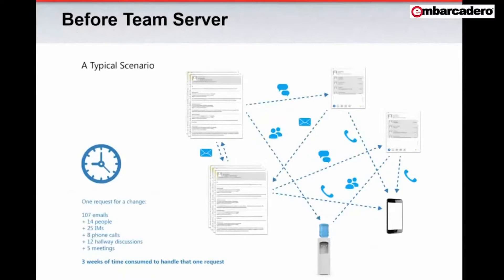Oftentimes, a seemingly simple question can set in motion a chaotic communication process in which a number of people participate using various communication outlets, including extremely long email threads, instant message products, and person-to-person discussions in a break room or in the hallways. Not only does this mean that questions and answers are difficult to track down, but it's also difficult to ensure that all the correct subject matter experts are included in the discussion.